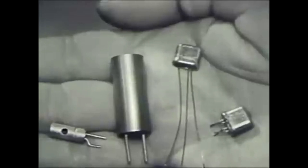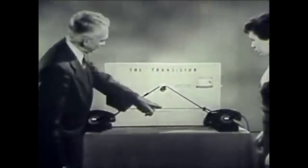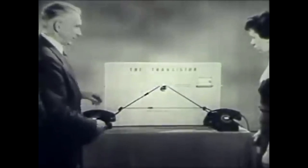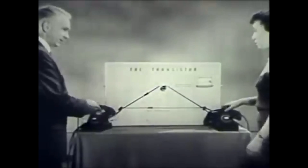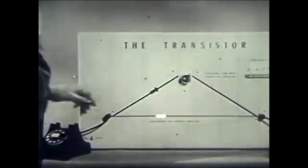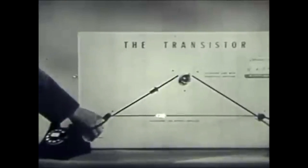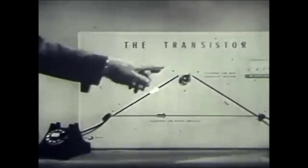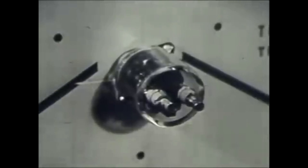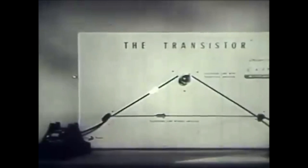Different types for different purposes. The Bell telephone people have lots of jobs lined up for them, jobs based on the transistor's ability to amplify speech sounds. This is how my voice would sound over a 75-mile telephone line that has no amplifying device. Now, with a transistor amplifier in the line, my voice is amplified so that you can hear me distinctly.